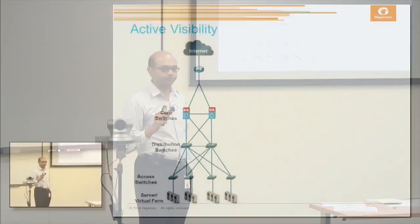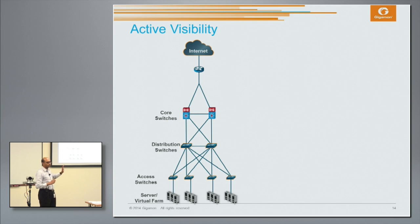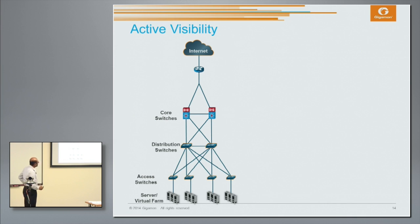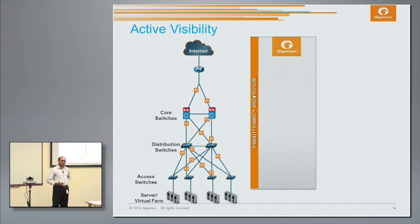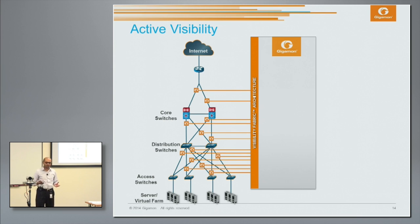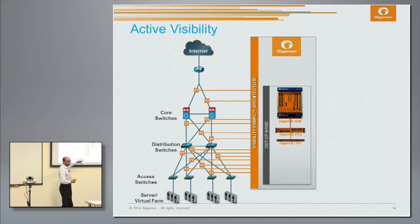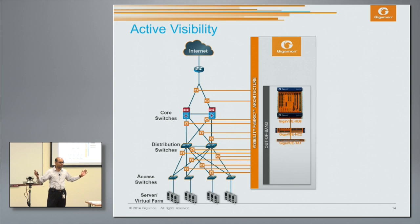Today's topic is about active visibility. I'm going to use the same picture that Peter showed and walk through what we mean by active visibility. This is a traditional data center architecture, just used to represent the network — by no means intended to suggest this is only for data centers. Customers have a need from the point of view of their visibility needs to have access to data sources, and that access comes from taps in physical networks, and those traffic sources get fed into visibility nodes.